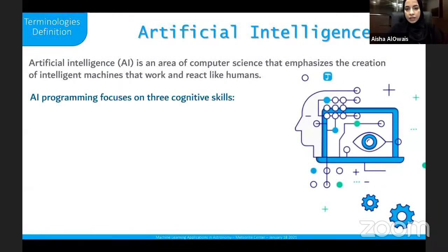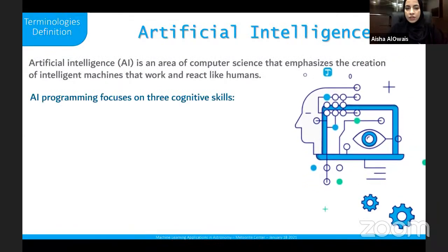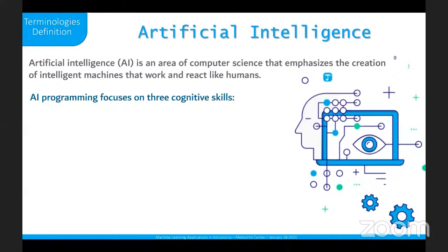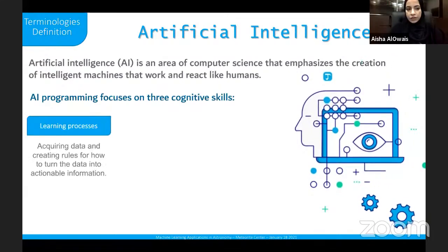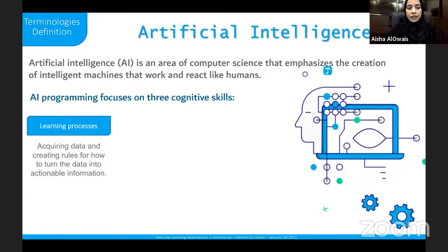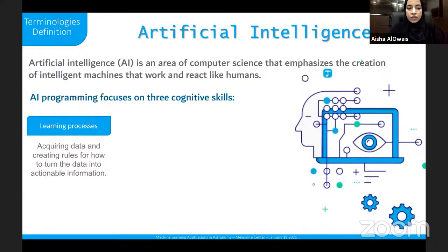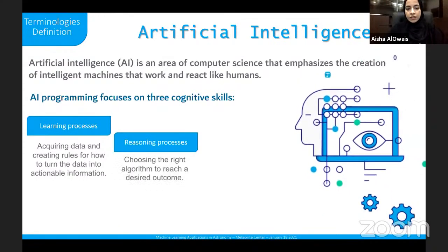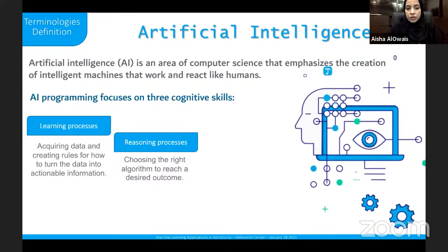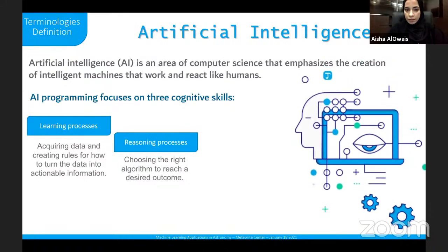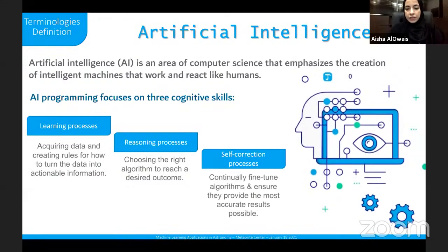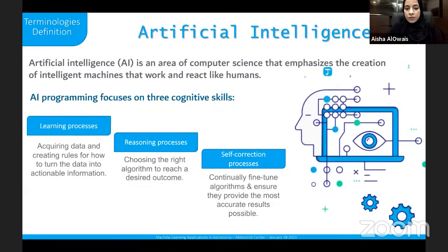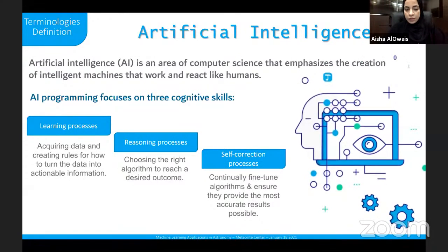Artificial intelligence is the field of intelligent machines that work and react like humans. Through this field, we teach computers how to behave like us. In AI programming, it focuses on three cognitive skills: the learning process, which acquires data and creates rules to turn data into actionable information; the reasoning process, which chooses the right algorithm to reach a desired outcome; and the self-correction process, which continually fine-tunes algorithms to provide the most accurate results possible.